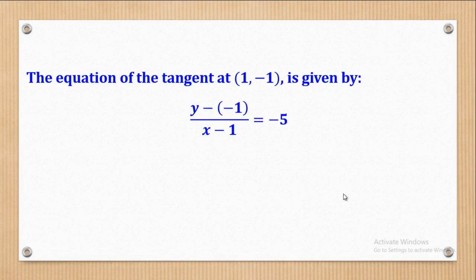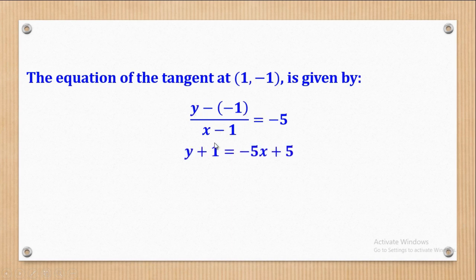Now that we know the gradient of the tangent is negative 5, we get the equation of the tangent: change in Y, where negative 1 is the Y coordinate, over change in X, where 1 is the X coordinate, equals the gradient of the tangent. We cross multiply and make Y the subject to get the equation of the tangent at point (1, negative 1).